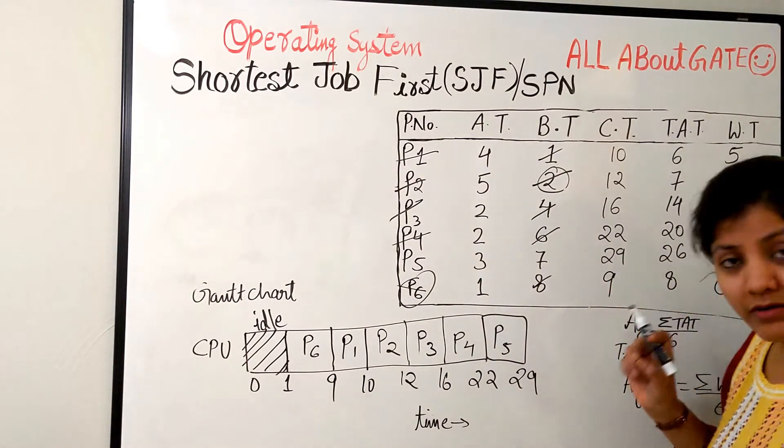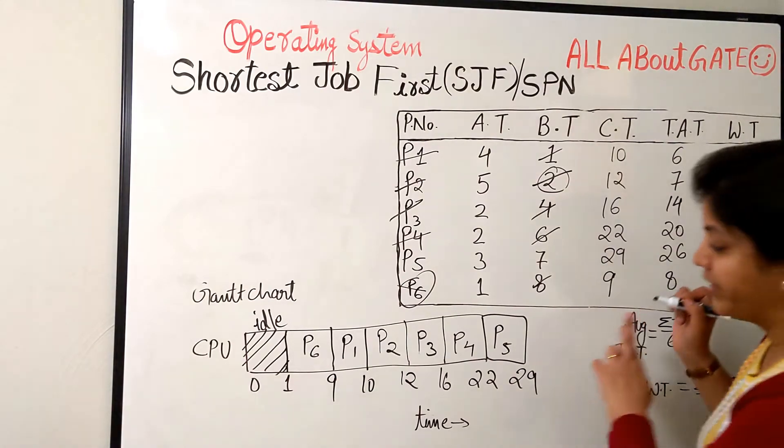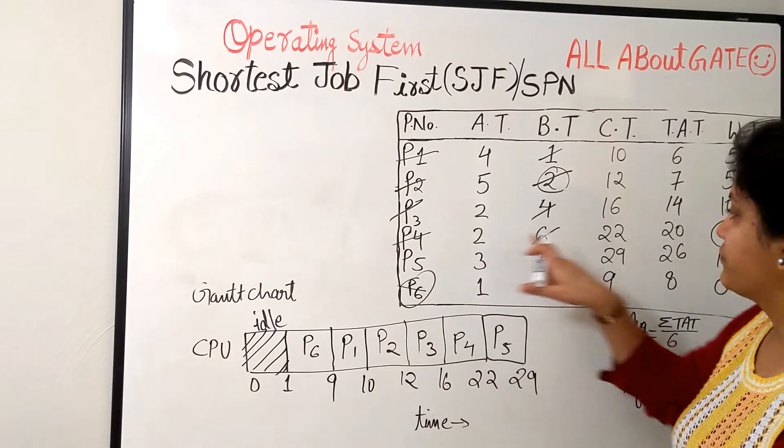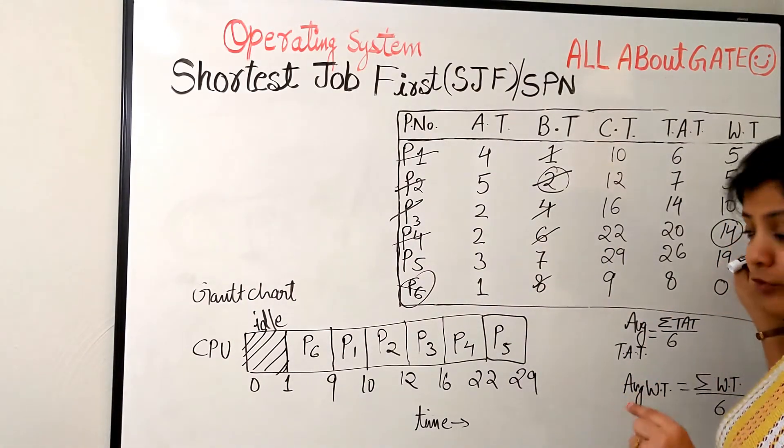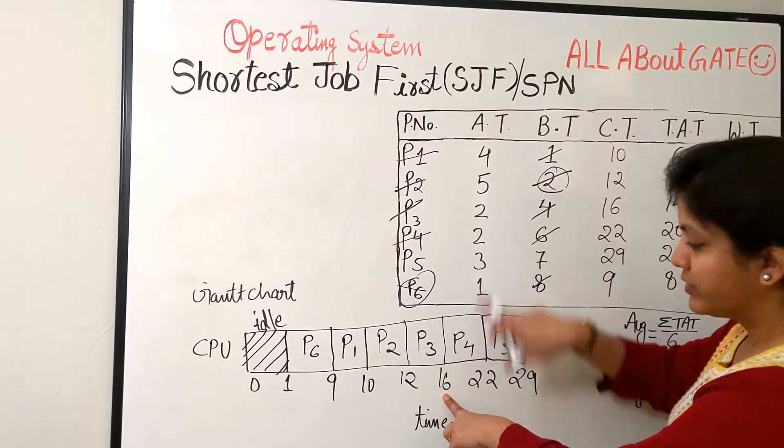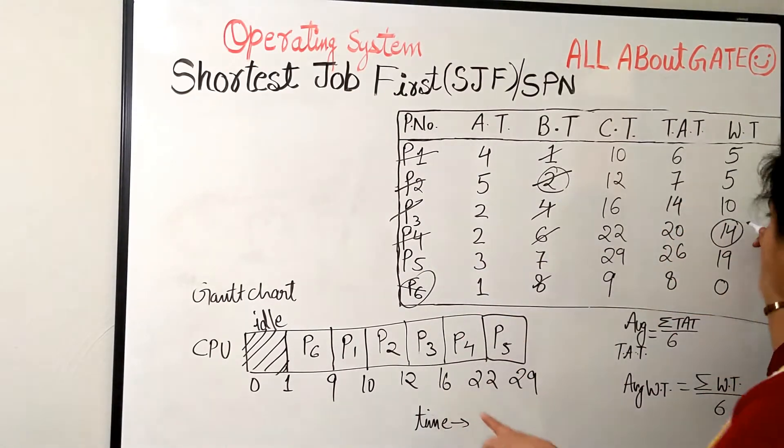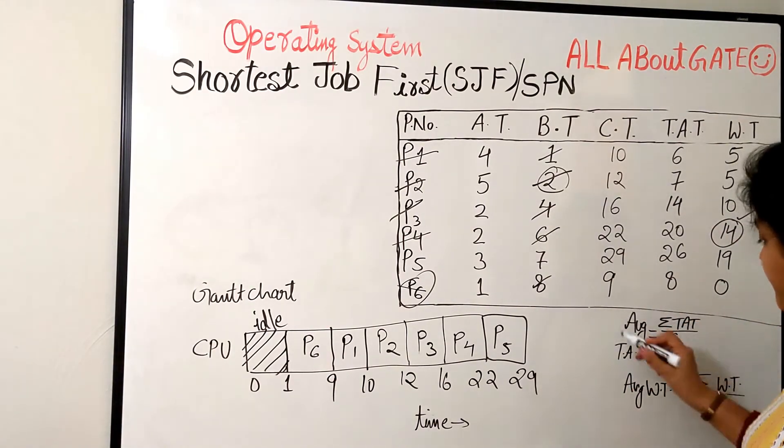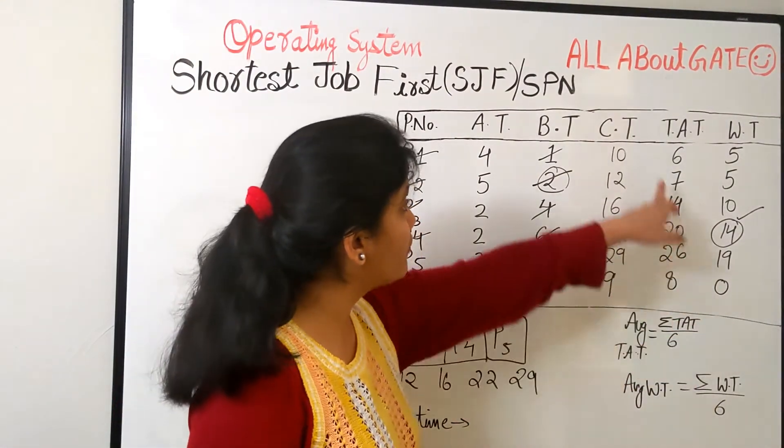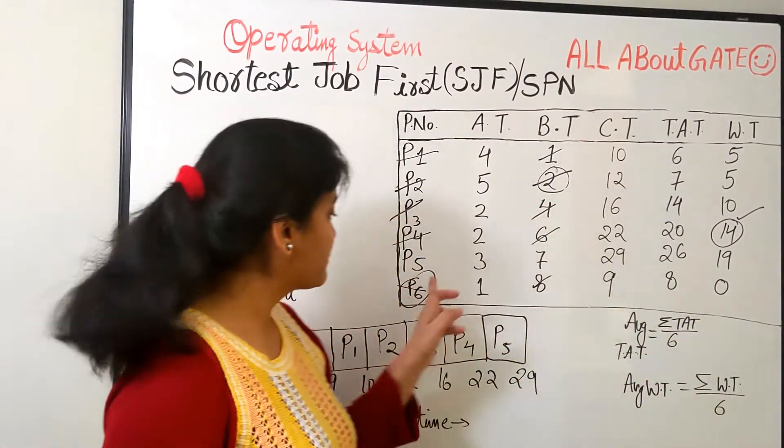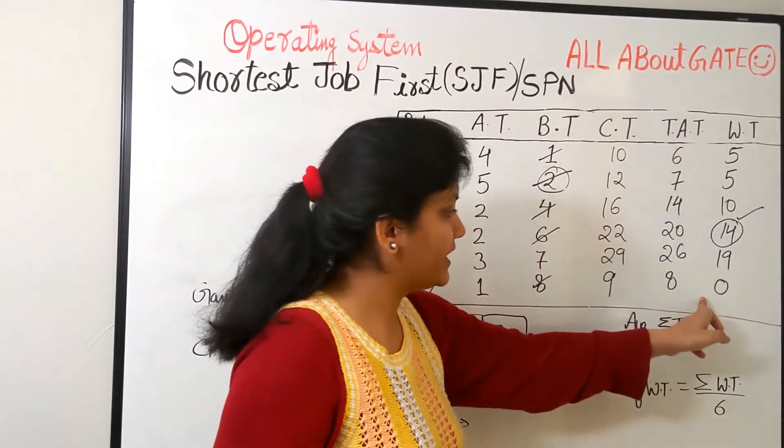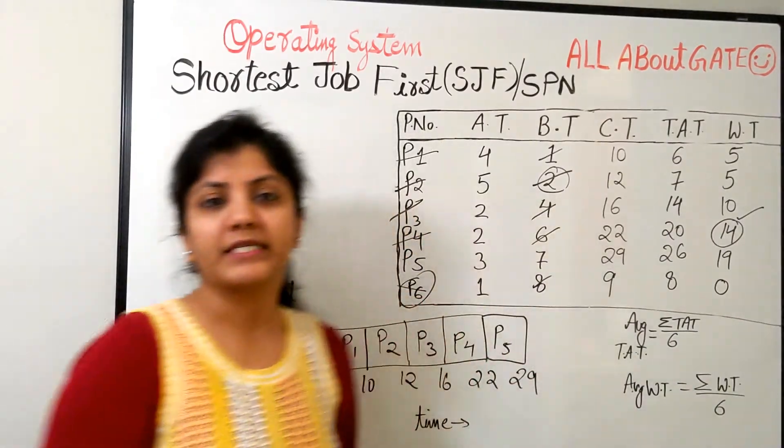And if you want to be confirmed that these times are right or not, you can confirm right from here. If you want to pick any, like if I am picking this process, process 4, how much it had to wait? I am getting 14. Let me just check it out. For P4, scheduled at 16. P4 came at 2. So 16 minus 2, 14. Absolutely correct. Now, average turnaround time and the average waiting time, you can simply find out by taking the summation of all the turnaround times divided by the number of processes which are 6 here. Similarly, average waiting time, you can find out summation of all the waiting times divided by 6 here.